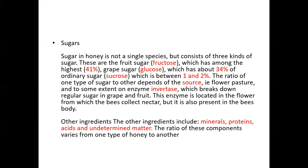The invertase enzyme is located in the flower from which bees collect nectar, but it is also present in the bee's body. Other ingredients in honey include minerals, proteins, acids, and undetermined matter. The undetermined matter includes pollens and other materials that stick to the bee's body as it moves from flower to flower. The ratio of these components varies from one type of honey to another.